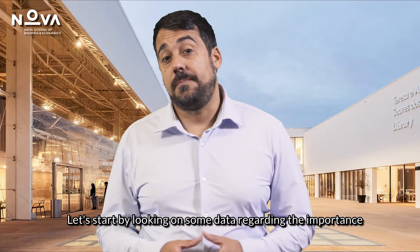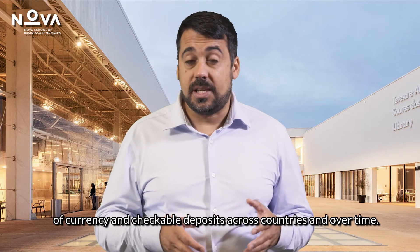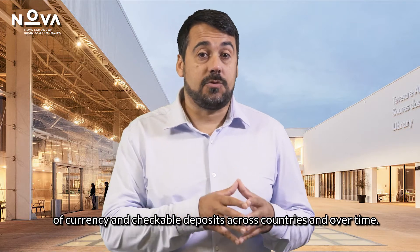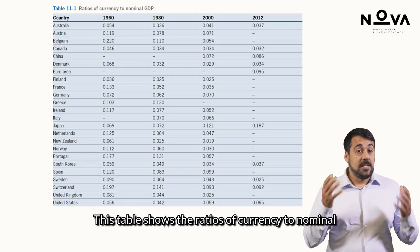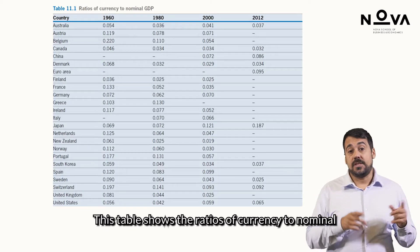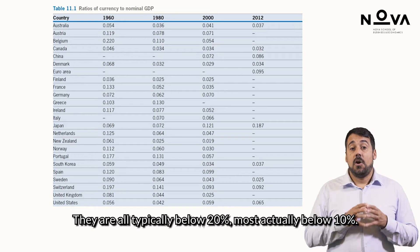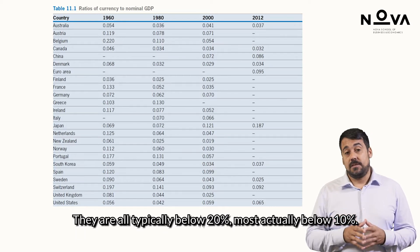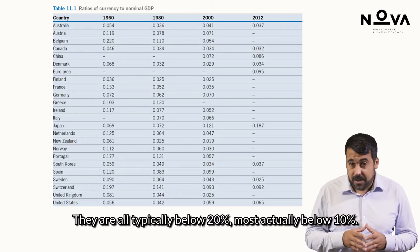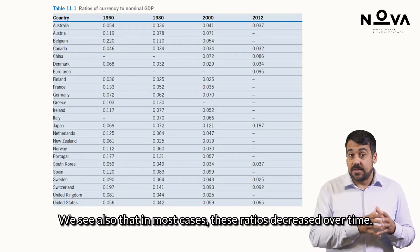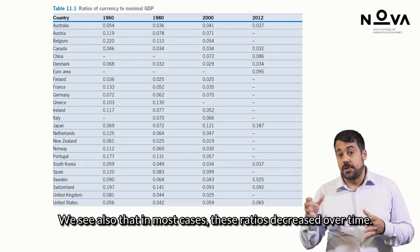Let's start by looking at some data regarding the importance of currency and checkable deposits across countries and over time. This table shows the ratios of currency to nominal GDP for different countries over time. They are all typically below 20%, most actually below 10%. We see also that in most cases these ratios decreased over time.